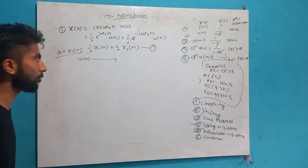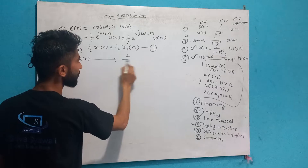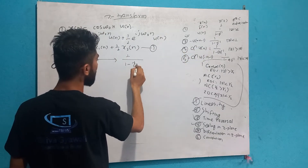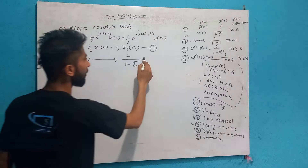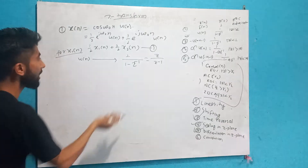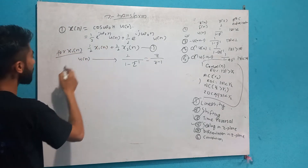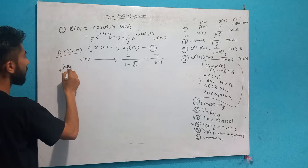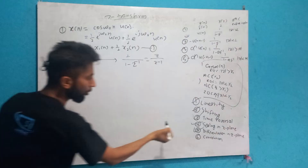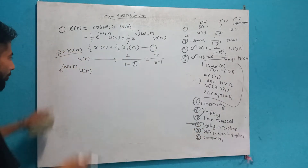So let's do this: 1 by 2, e to the power x. 1 by 1 by z inverse, which is the same — this will be z by z minus 1. This is the inverse and the z. Now, what is the inverse? e to the power j ω₀, u(n). What is the scaling property?